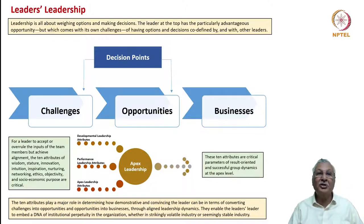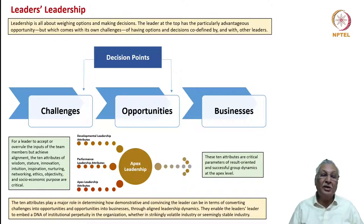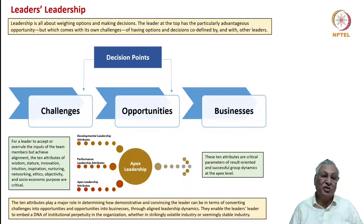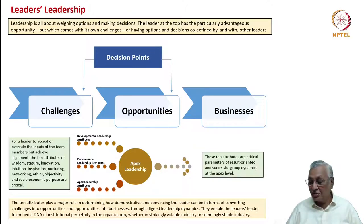These 10 apex leadership attributes, sitting on top of developmental and performance leadership attributes, make for very result-oriented and successful group dynamics at the apex level. They demonstrate the leader's capability to manage a group of equally talented and knowledgeable leaders. By leading this group with stature and wisdom, socio-economic purpose, and full ethical strength, the leader outweighs forces that could act contrary to the organization's laudable goals — ensuring a DNA of institutional perpetuity regardless of whether the industry is volatile, stable, or in turnaround mode.